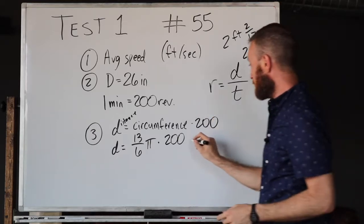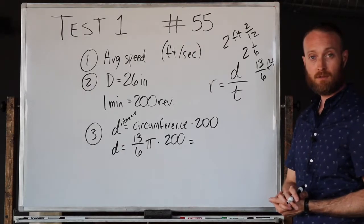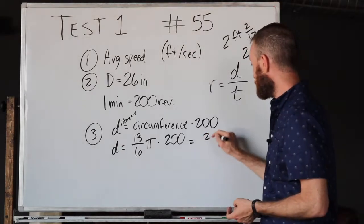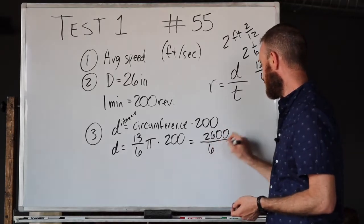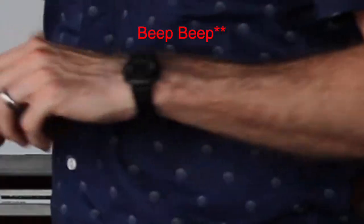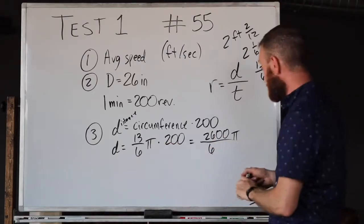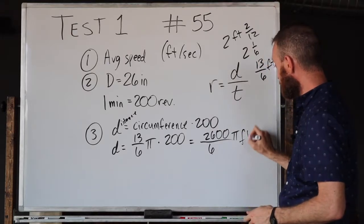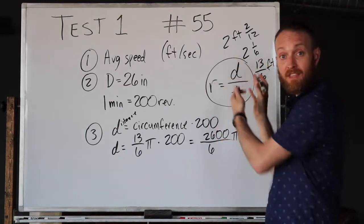So 13π/6 times 200 - that's going to be 2600π/6. So we found the distance in feet, and that was the first step of being able to use this valuable equation to find the rate at the end of this whole problem.